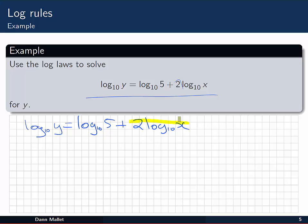First of all, I know that I can rewrite this as the log base 10 of x squared. So I have log base 10 of 5 plus log base 10 of x squared. Still the same left hand side.